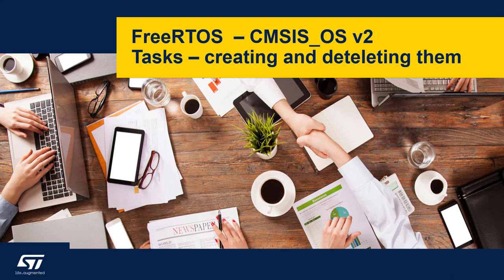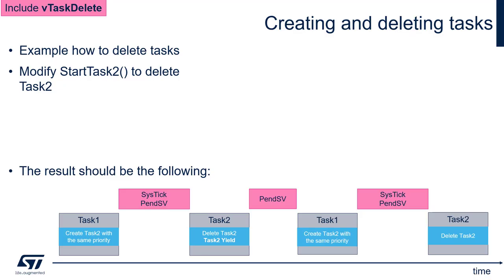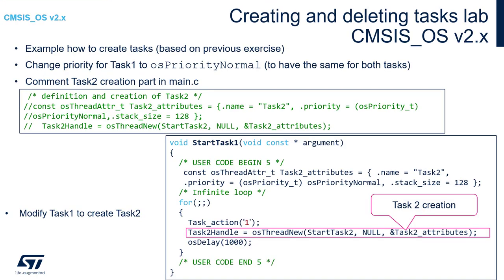Let's have a look at how to create and delete tasks from a running operating system based application. It is possible to create a task and delete it from another task's entry function. We'll create a simple example where within start task 1 we will create task 2 with the same priority, and within start task 2 we will delete ourselves and give space back to task 1. Then in the next iteration, task 1 will create task 2 again, and the story continues.